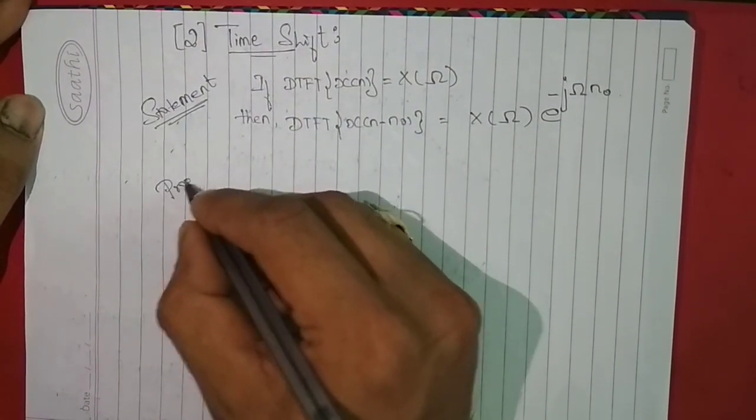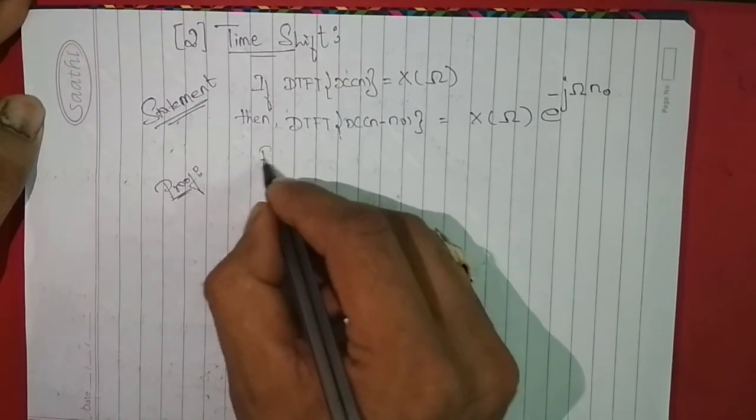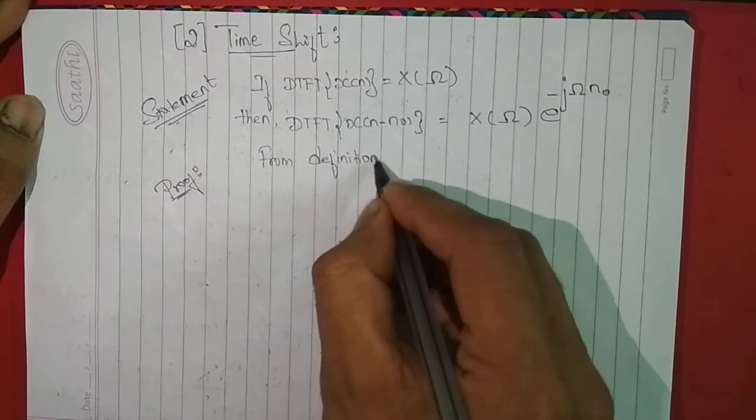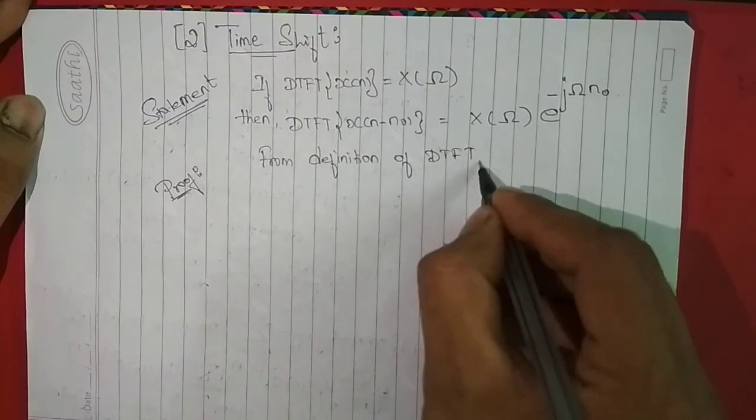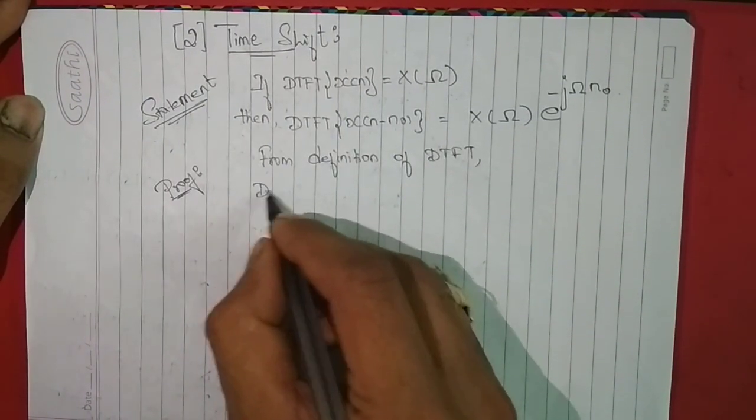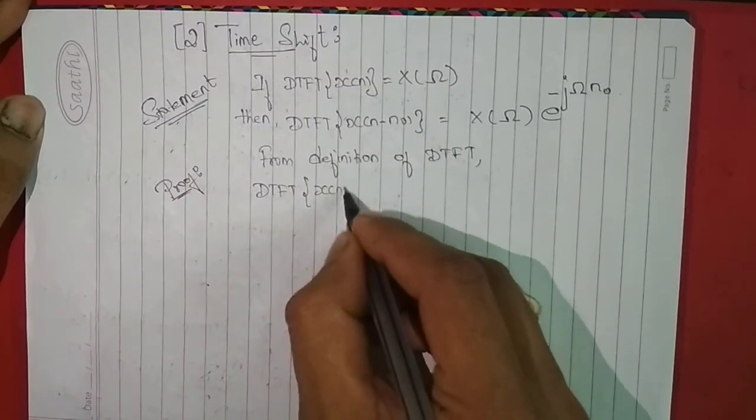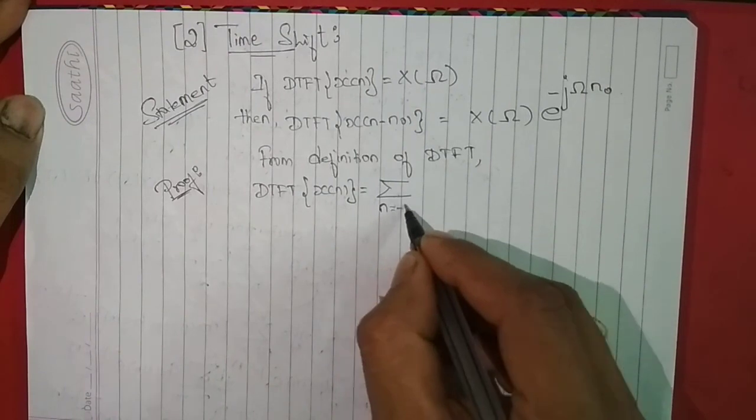So we will try to prove it. We know that from the definition of DTFT, we have DTFT of x(n) is equal to summation n